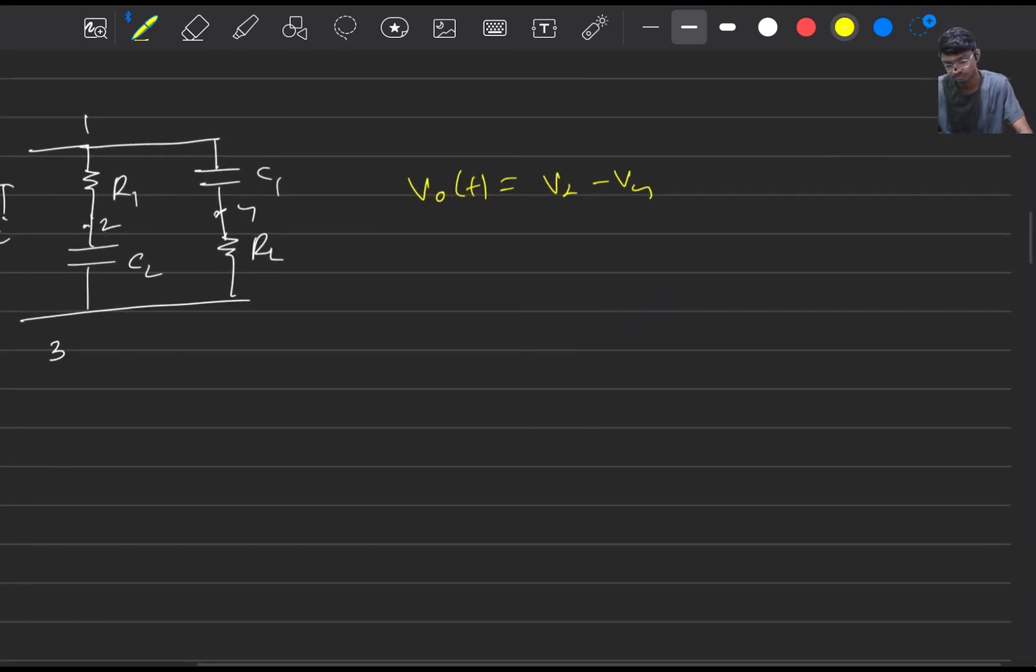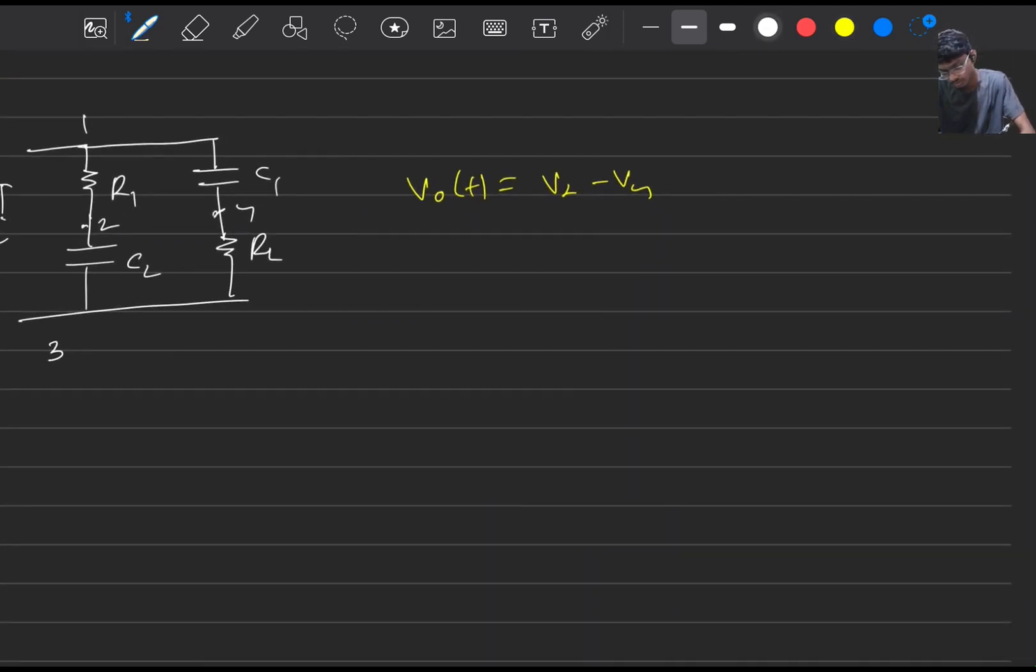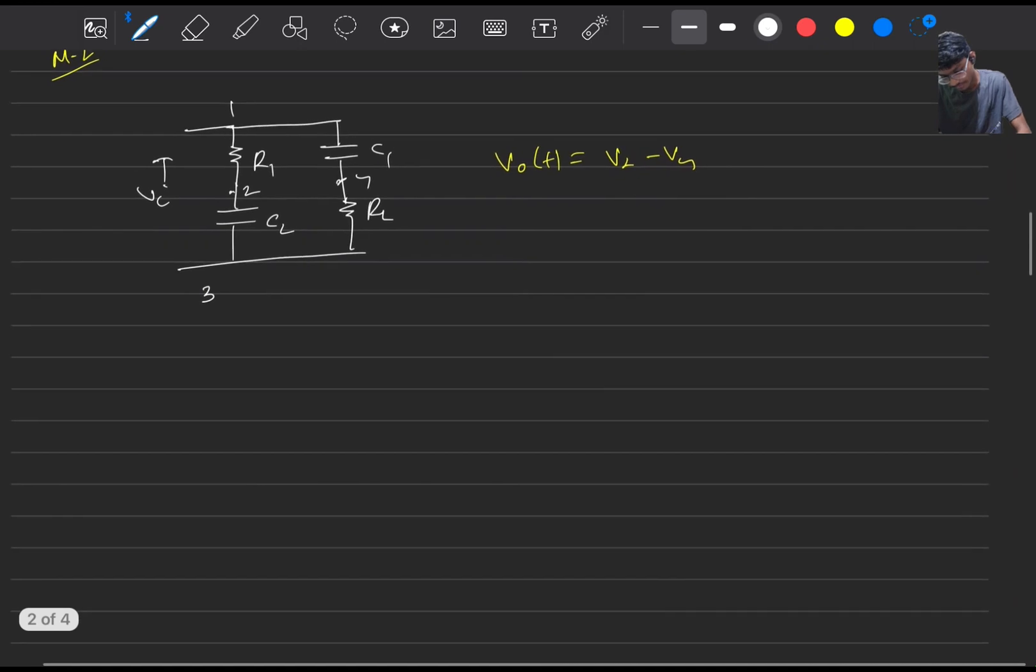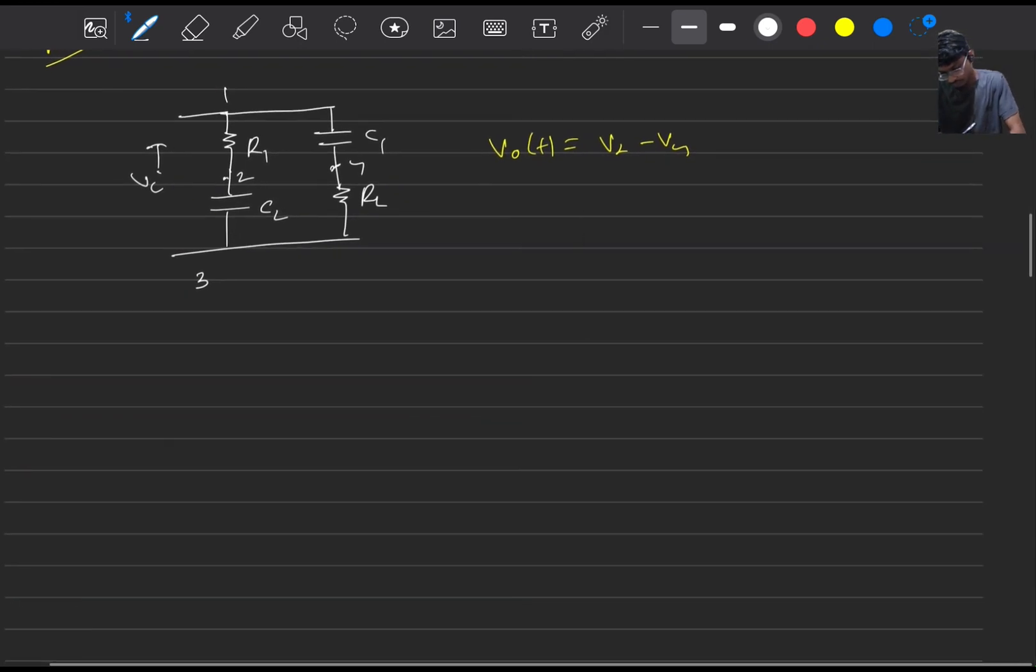So if we just, this is a simple RC circuit, right? R and C1, and for our case simply we just take it RC. And this second circuit is CR.